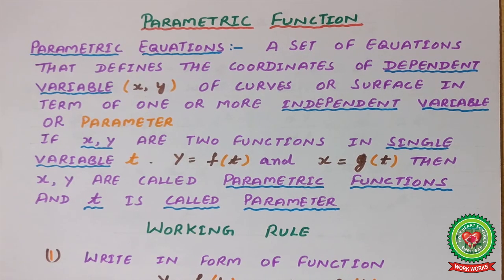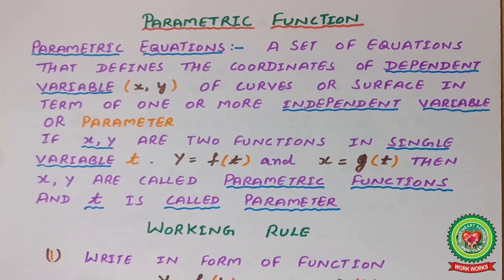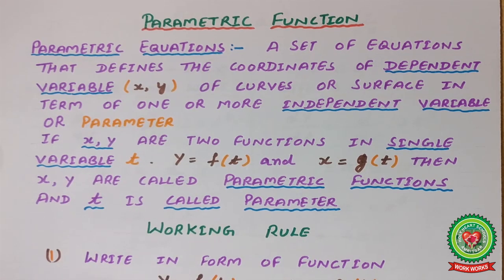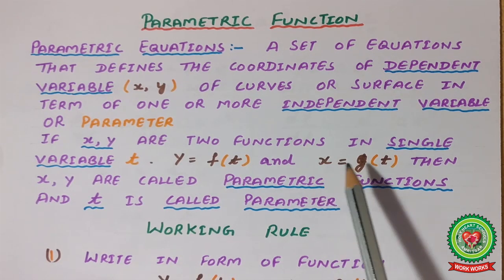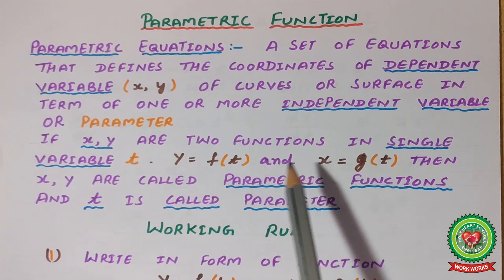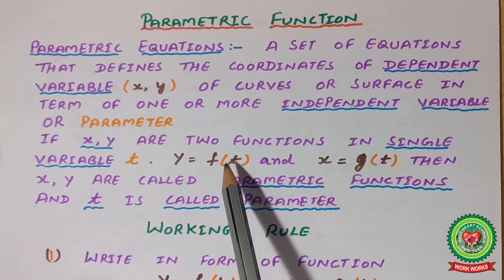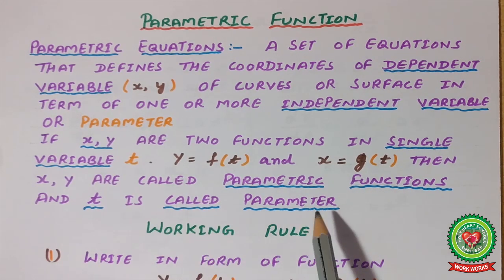Now in case of functions, if x and y are two functions with the single variable t — where y = f(t) and x = g(t) — then x and y are called parametric functions, because these two values share the same variable t, and t is called the parameter through which we find the change in these two functions.